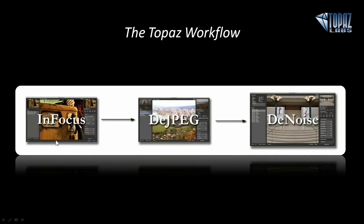For that first tier, we recommend starting with InFocus, especially for capture sharpening or a little bit of blur, then DJPEG for heavier artifacts, and then Denoise to get rid of smaller noise. The only reason this would change is if you have a ton of high ISO noise in your image — then you can take it into Denoise first and then into InFocus for capture sharpening. But if you're not dealing with heavy noise, go with InFocus first because it will give you lovely capture sharpening right at the beginning of your workflow.